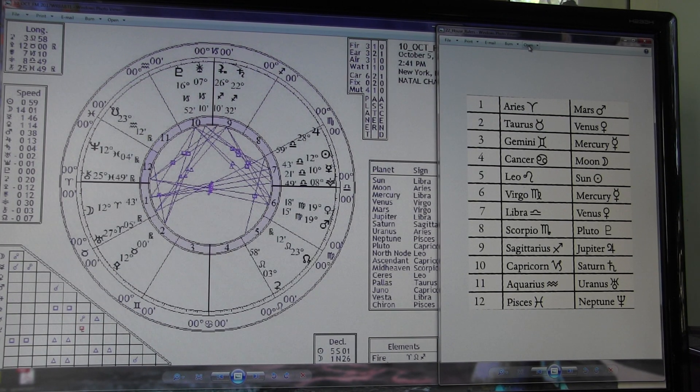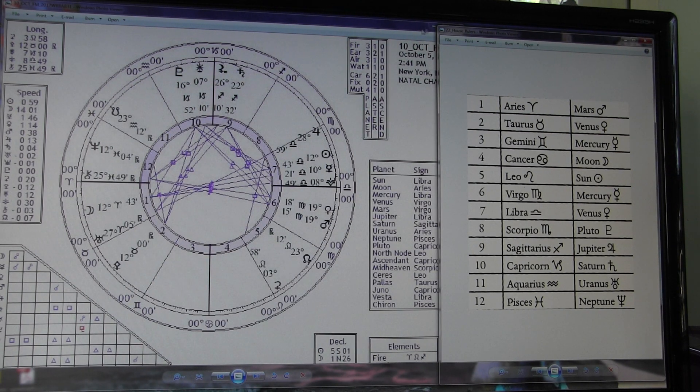Hi everyone, Vicki Verley here, Rock and Roll Prophetess. We are going to take a look at this full moon chart, the full moon on October 5th.